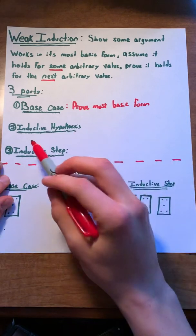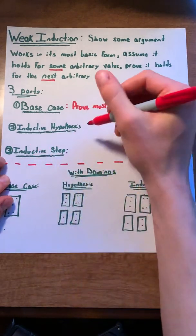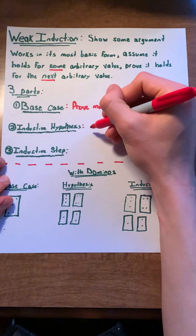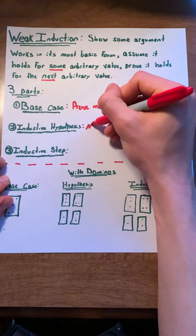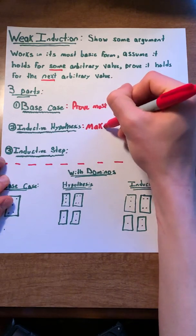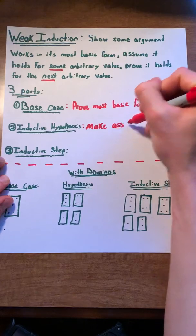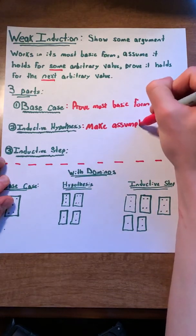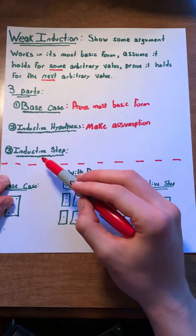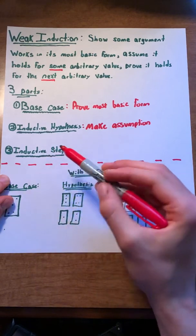The second part of our argument is the inductive hypothesis. This is where we make an assumption for some arbitrary value. And our final step of the argument will be the inductive step.